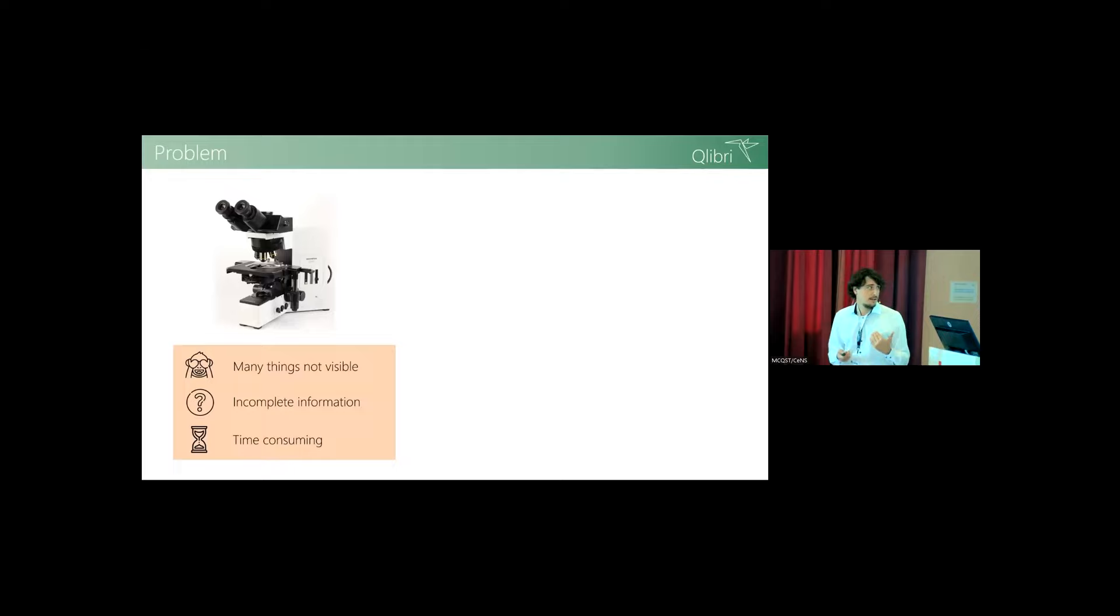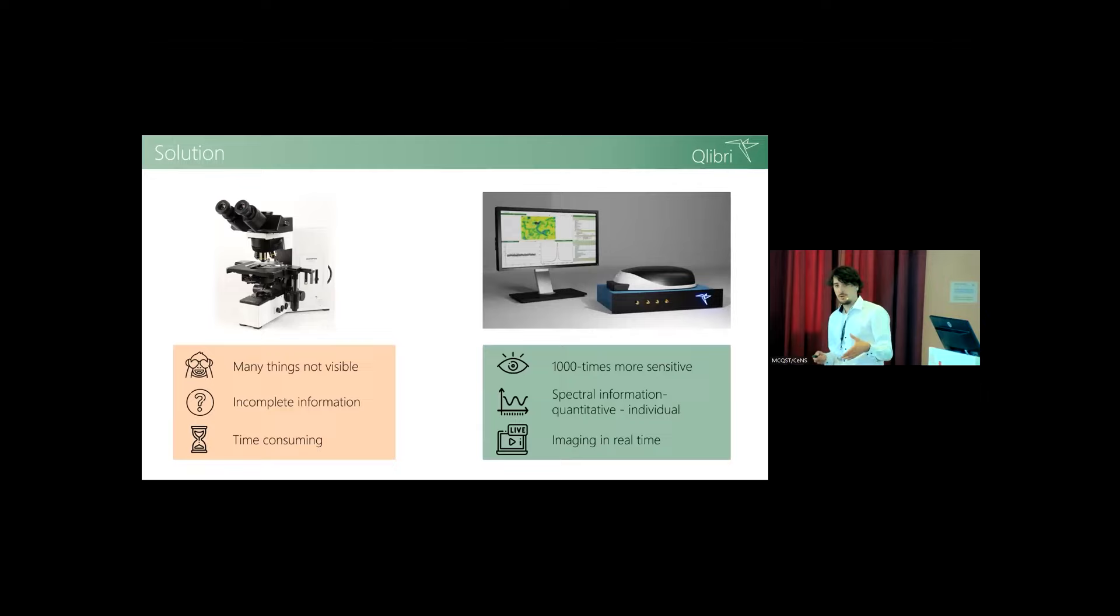In our opinion, we're a bit stuck because actual methods have many things not visible at all on the nanoscale. You have incomplete information, it's very time consuming. There are many really elaborate and nice techniques like labeling and Raman scattering that can circumvent that, but they all kind of at the end boil down to these limitations. We want to solve this problem by an absorption microscope that is a factor of thousand times more sensitive than any commercial absorption microscope on the market. In the meantime, we can do spectral information of a sample in real time. This is a really huge step forward.